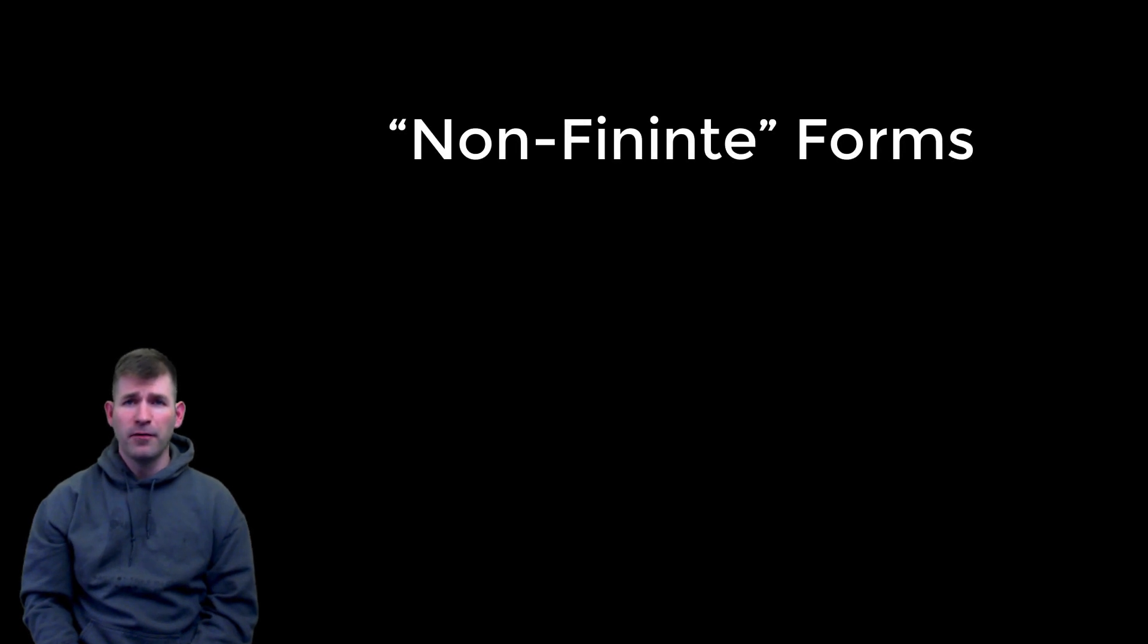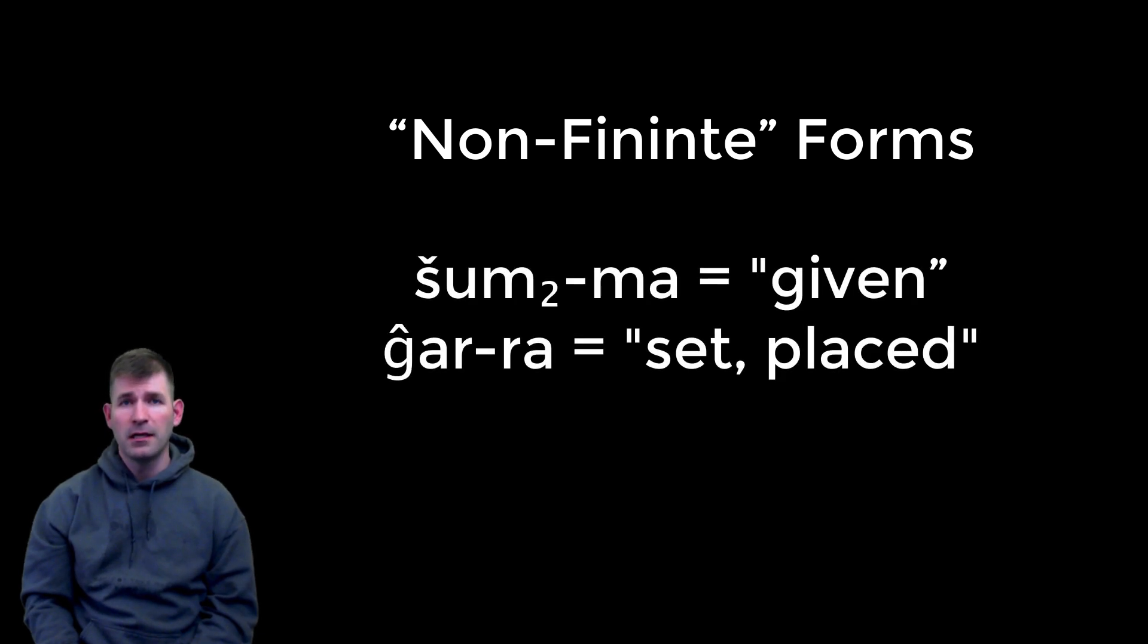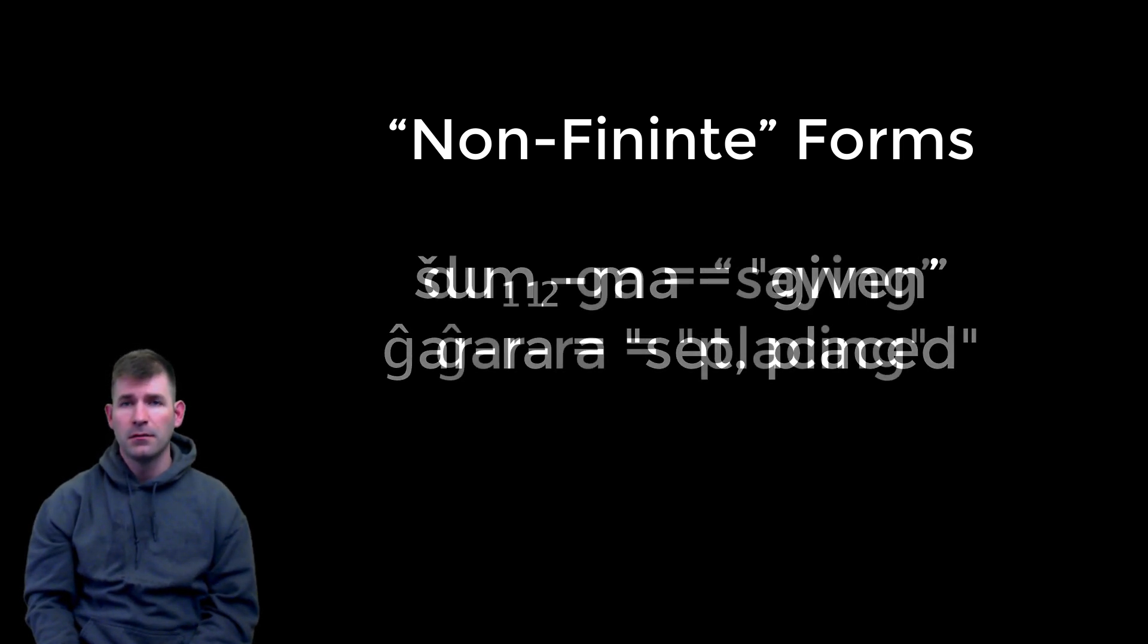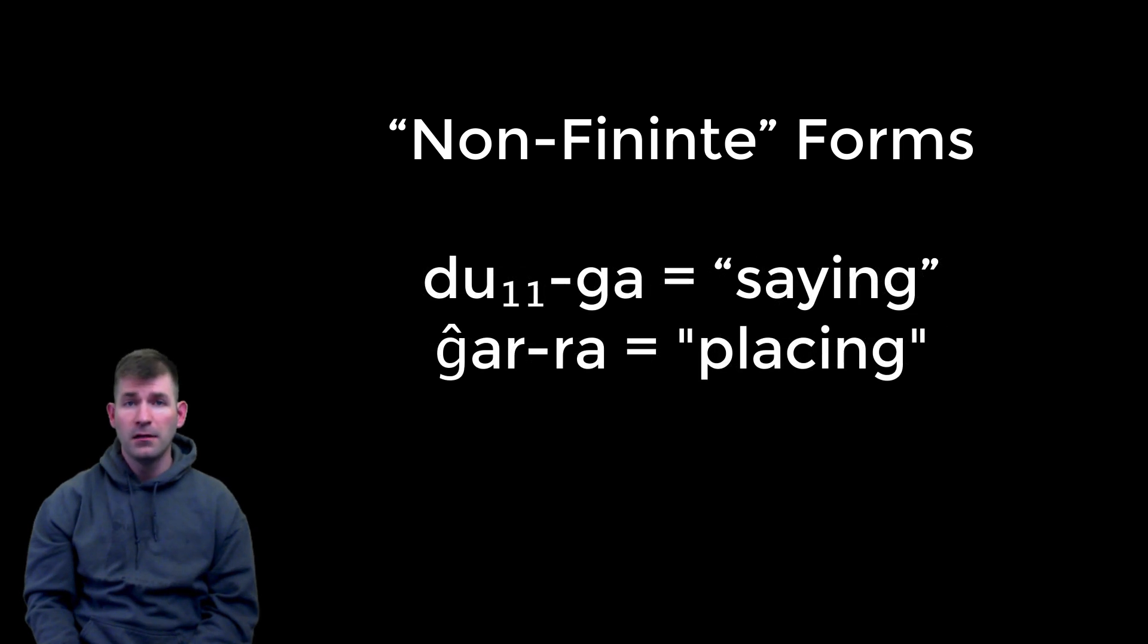Non-finite simply refers to those forms that are not regular verbs: infinitives, participles, etc. We learned in an earlier lesson that the verbal form can appear by itself or with an a and can be translated either in a passive way—šum₂-ma, 'given,' or ĝar-a, 'set, placed'—or like a participle, usually ending in -ing in English: du₁₁-e₁₁-ga, 'saying,' and ĝar-a, 'placing.'